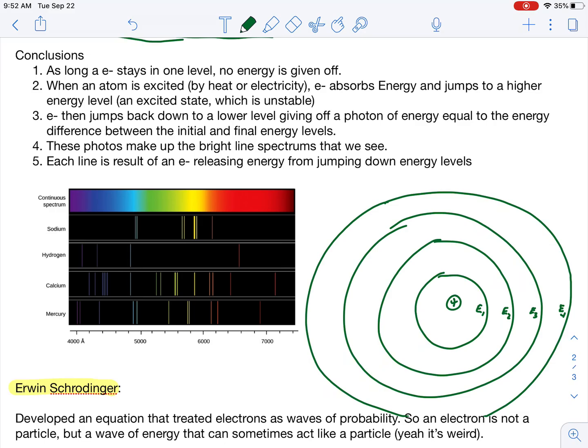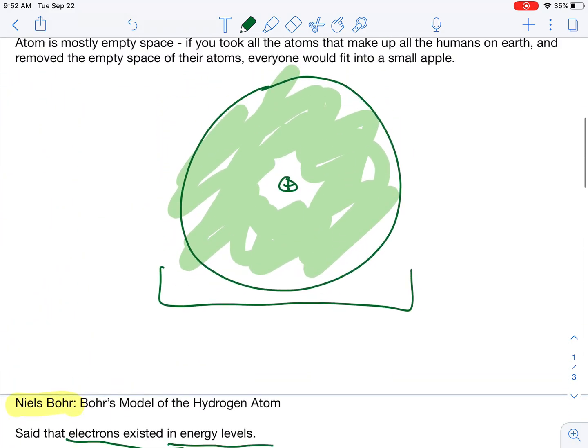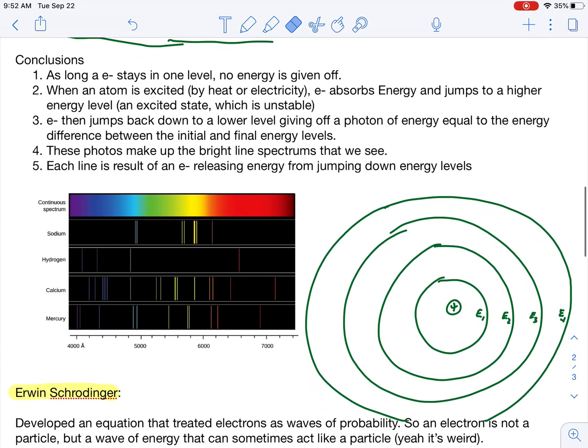So he said the electrons can reside only at these energy levels. Rutherford said the electron is somewhere around here, but we don't know where. Bohr said, no, it's more like a bullseye where these energy levels are where electrons can reside. And he came up with this idea when he looked at bright line spectrums. So he said, as long as the electron stays in one level, no energy is given off. So an electron might reside at E1. We'll call that the ground state. The electron can reside there. No big deal.